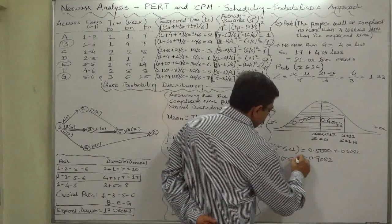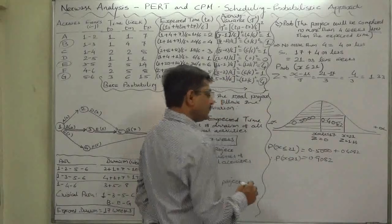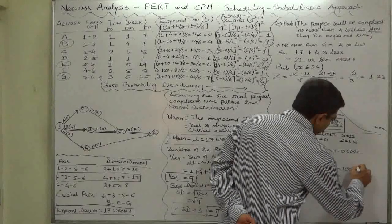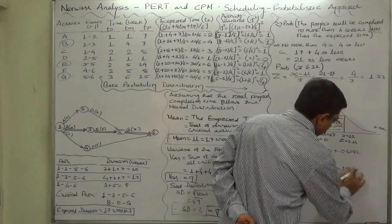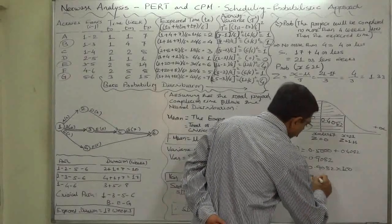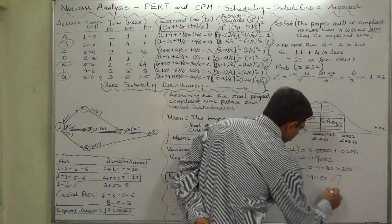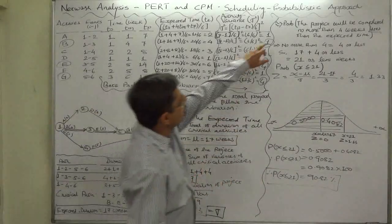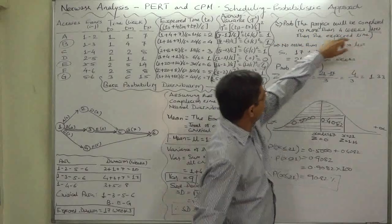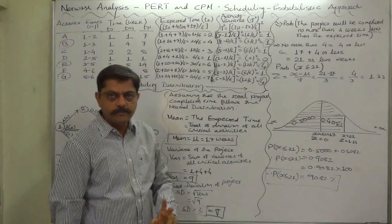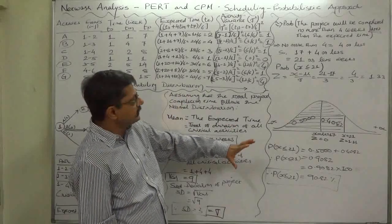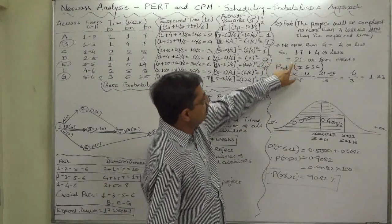Probability of x less than or equal to 21 is 0.9082. If we multiply this by 100, we get the answer in terms of percentage. So the probability of x less than or equal to 21 is 90.82%, approximately 91 percent. This is the probability that the project will be completed no more than four weeks later than the expected time, or simply approximately 91 percent probability that the project will be completed in 21 weeks.